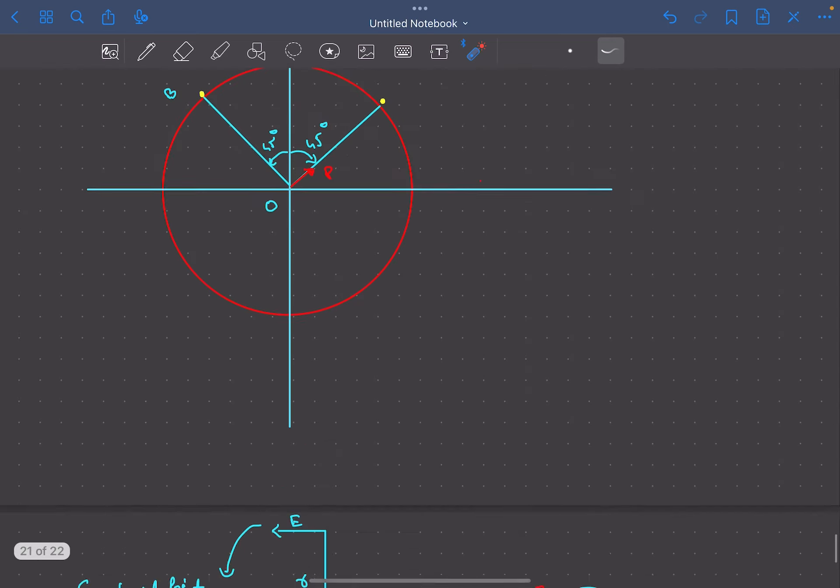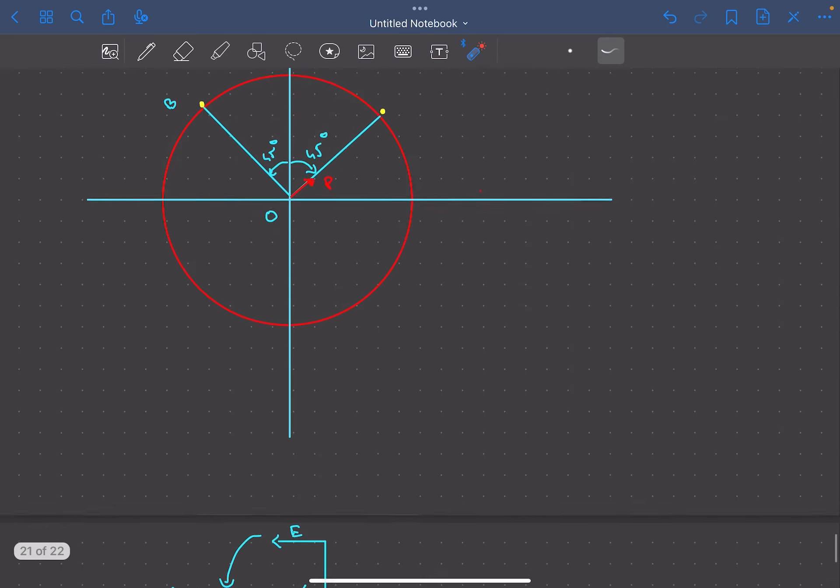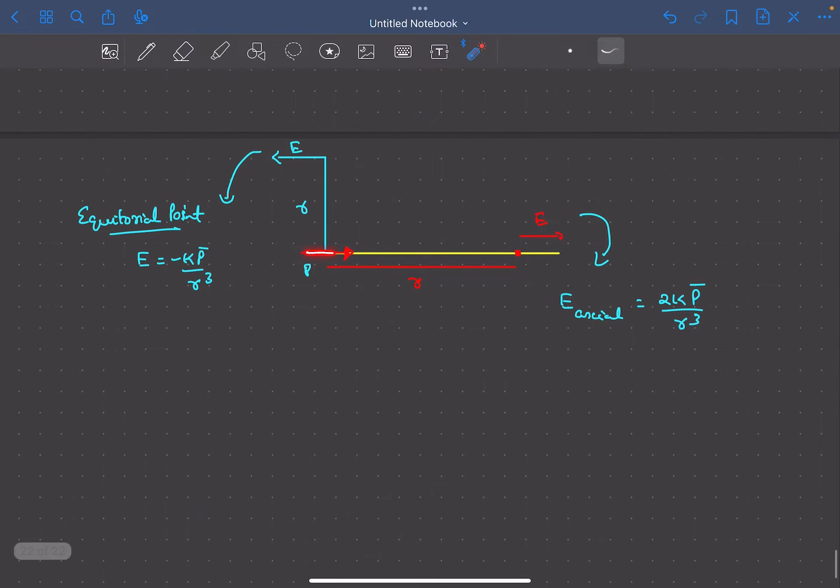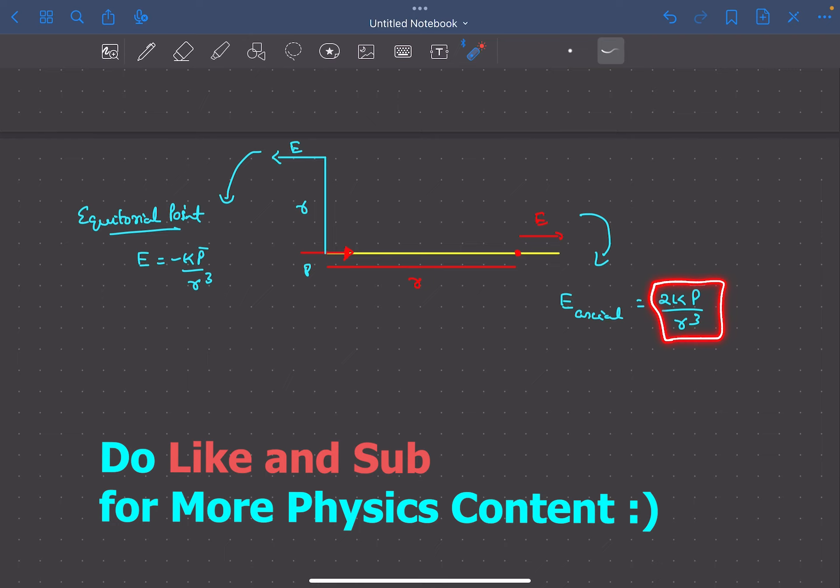Before we begin with the solution, we need to discuss two important basic results. If we have a point dipole whose dipole moment is p, then the electric field due to this dipole at a distance R along the axis is 2kp/R³.